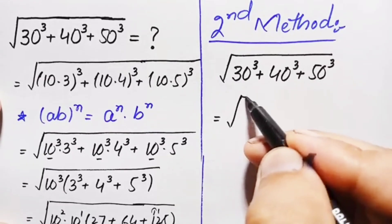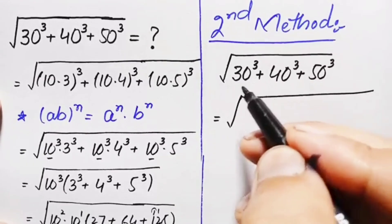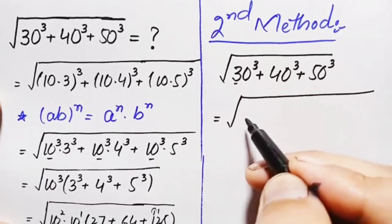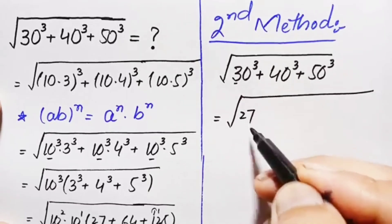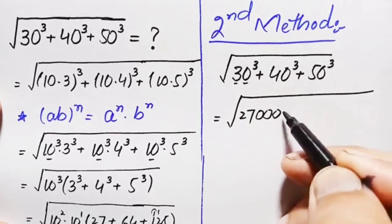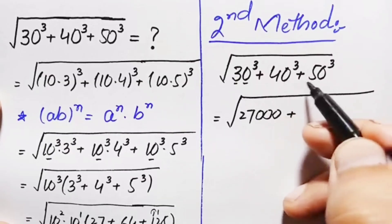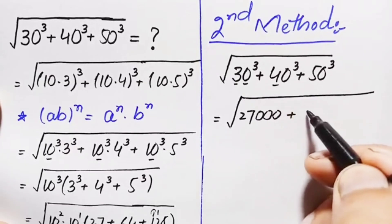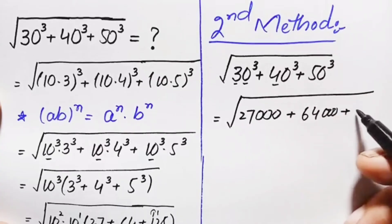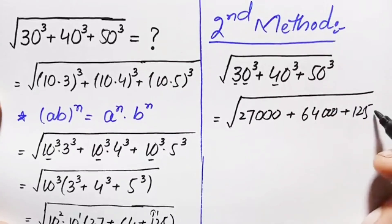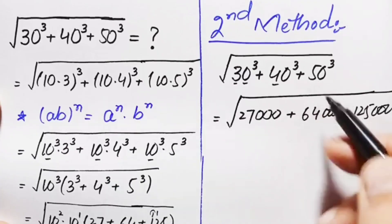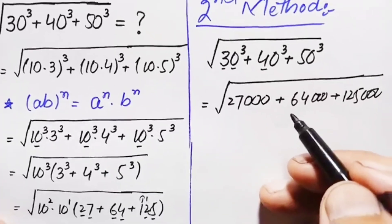30 cubed: since 3 cubed is 27, we write three zeros, giving 27,000. 40 cubed: since 4 cubed is 64, with three zeros, that is 64,000. 50 cubed: since 5 cubed is 125, with three zeros, that is 125,000.